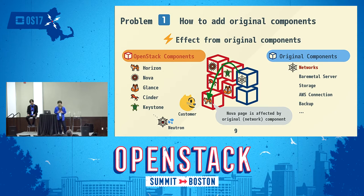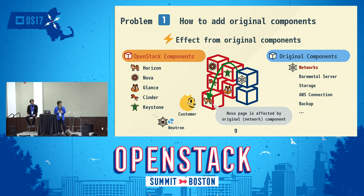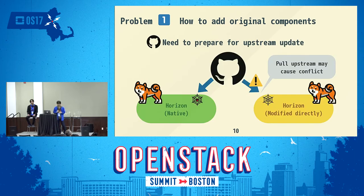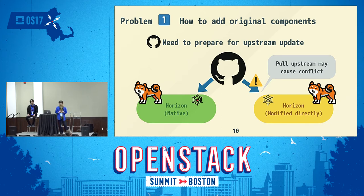Because inside Nova pages, Horizon is executing many Neutron API calls to get instance network information. But these parts do not work correctly because we changed the network component. The most simple way to fix this problem is to just rewrite or modify Horizon code itself. But if we modify Horizon code directly, it becomes really difficult to get upstream changes from the Horizon remote repository into our repository, because these cases usually cause many conflicts. So we had to find some effective way to realize both — keeping up with upstream changes while also changing Horizon's behavior.